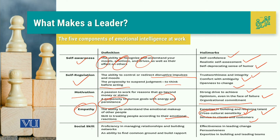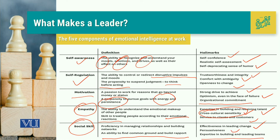The last but not the least emotional intelligence ingredient is social skill. Its definition is proficiency in managing relationships and building networks. It can also be defined as an ability to find common ground and build rapport. The hallmarks of this particular trait are: number one, effectiveness in leading change; persuasiveness; and expertise in building and leading teams. These are all the hallmarks we need to acquire to maintain our emotional intelligence with followers.